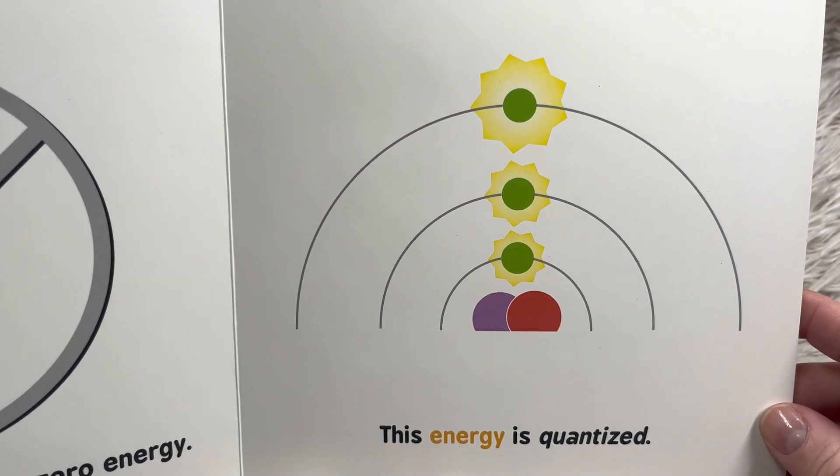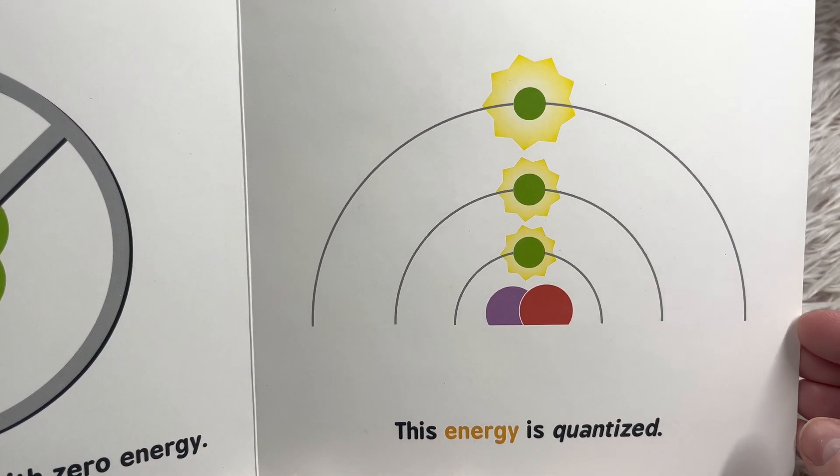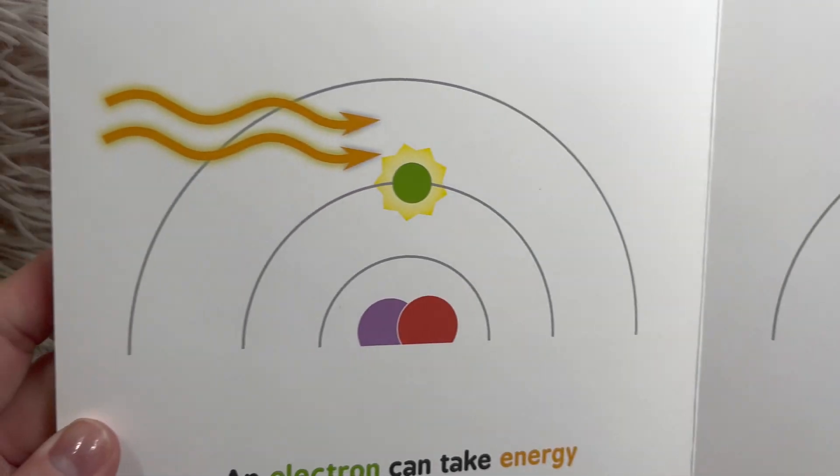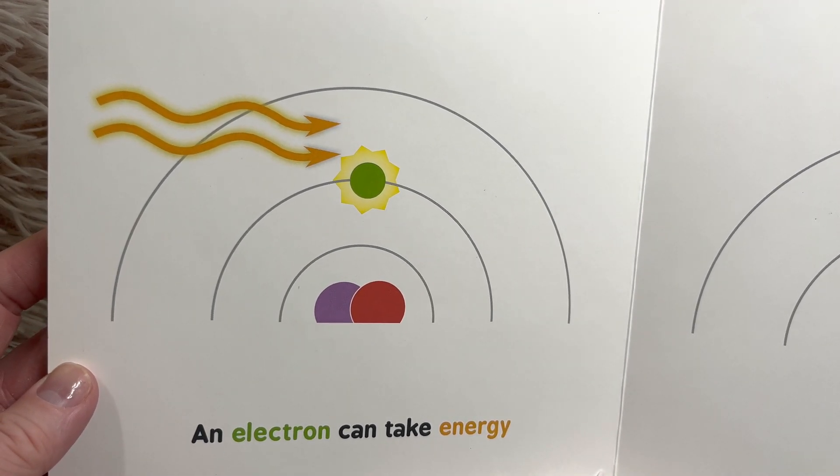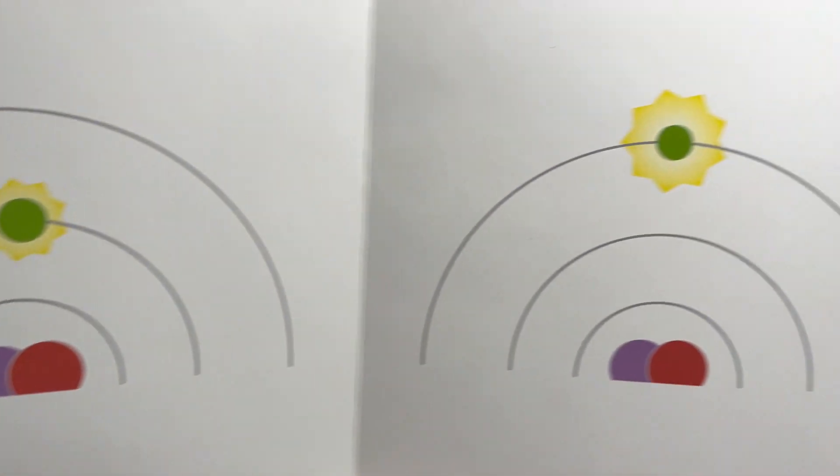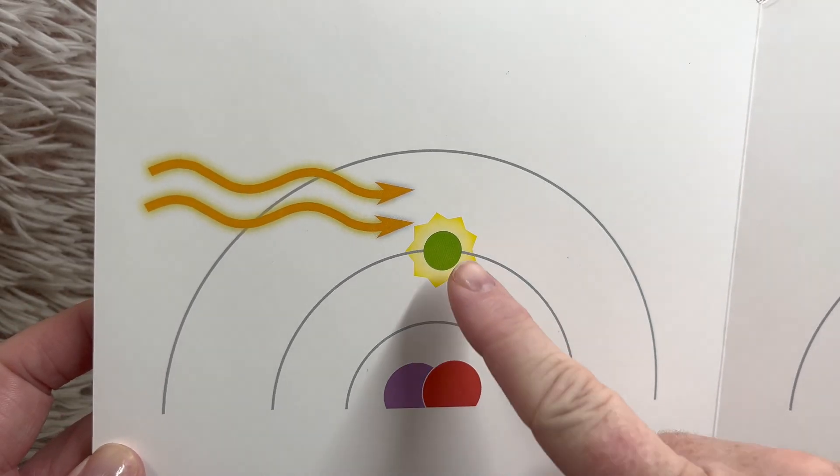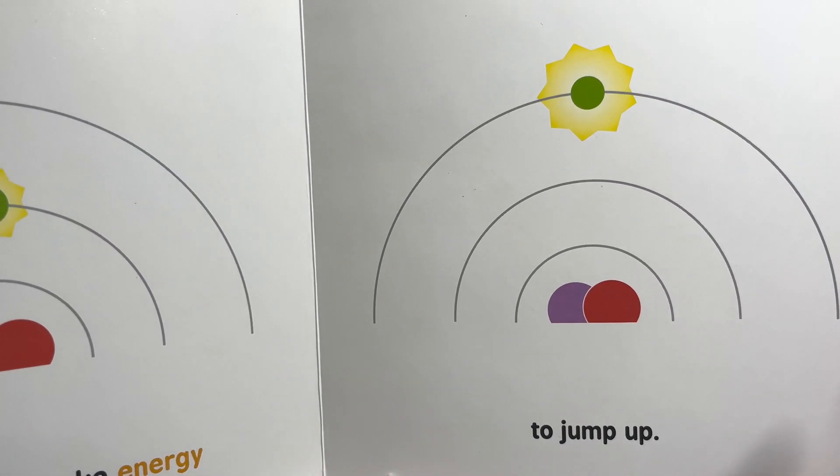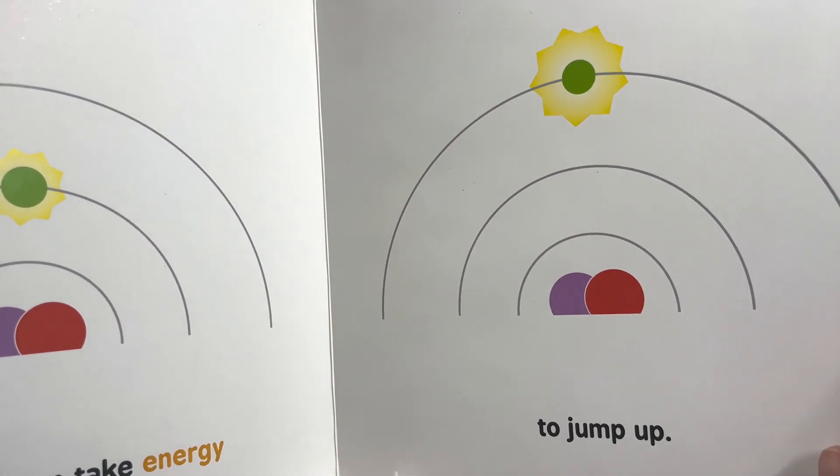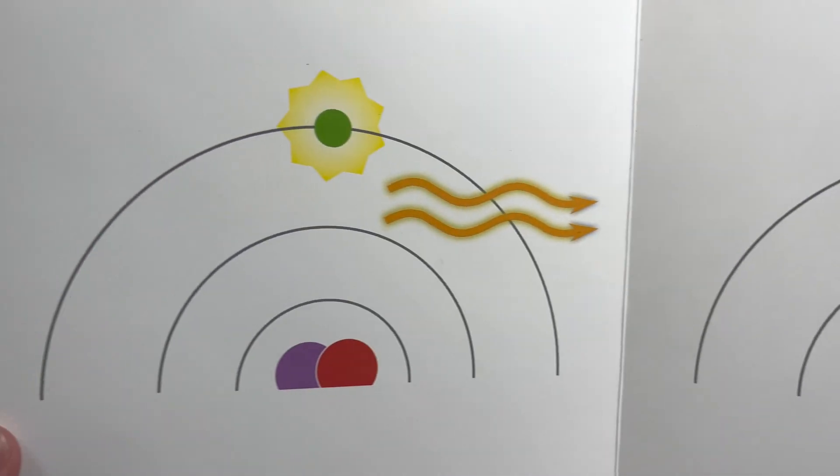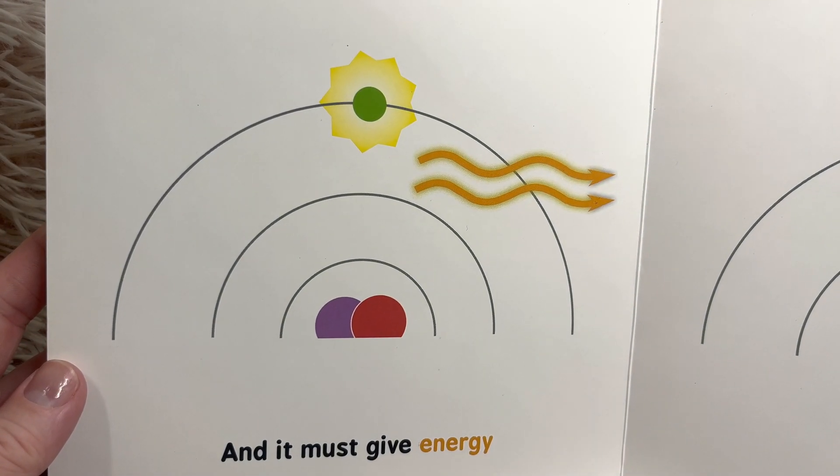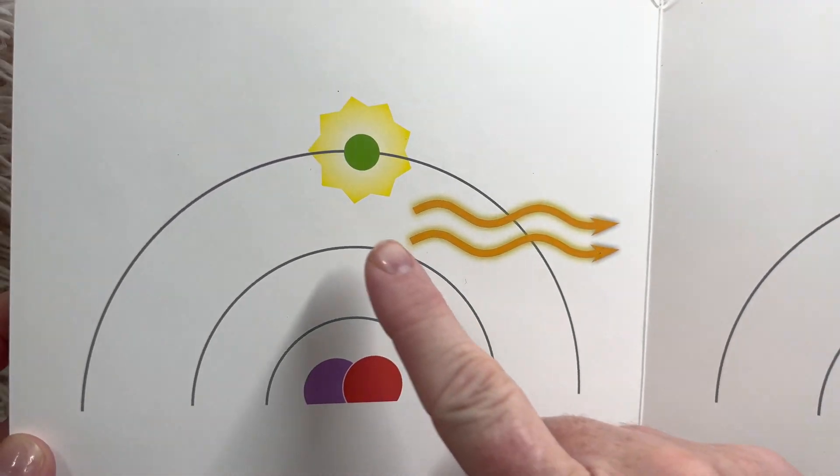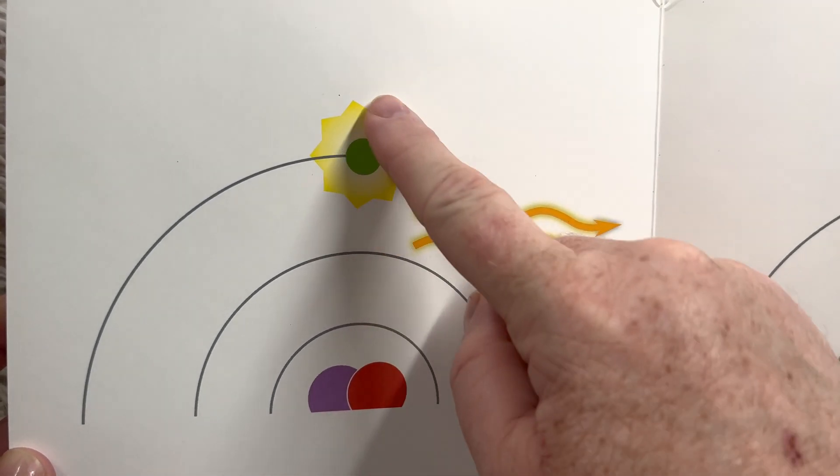This energy is quantized. An electron must take energy to rise up and must give energy to fall down. It takes energy if it's here and it bumps up.